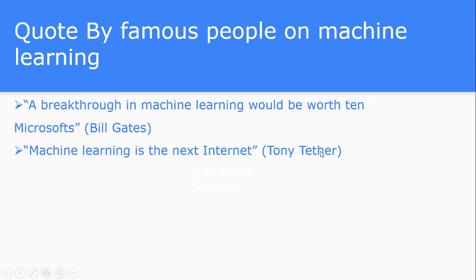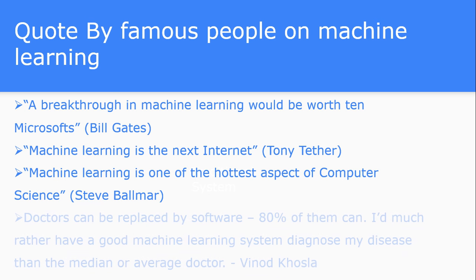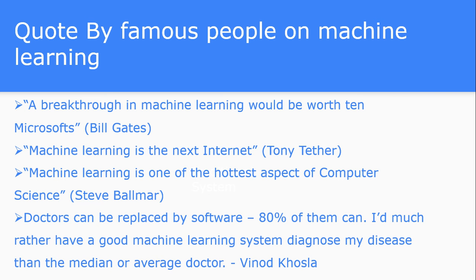Tony Tether, the director of DARPA, once said that machine learning is going to become the next internet. Steve Ballmer, former CEO of Microsoft, once said that machine learning has become the hottest aspect of computer science. If you are building any computer system or software system, you need to put a machine learning component to make it intelligent — so it has become one of the hottest areas of computer science right now.